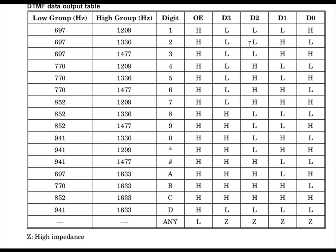For digit 2, the binary output is 0, 0, 1, 0. For digit 3, it is 0, 0, 1, 1.